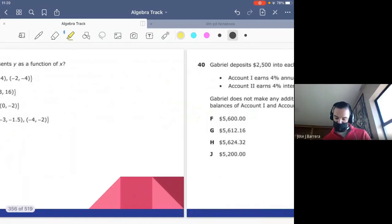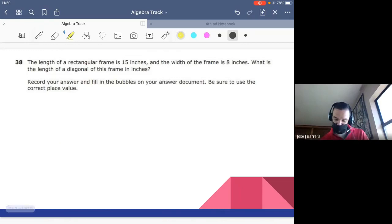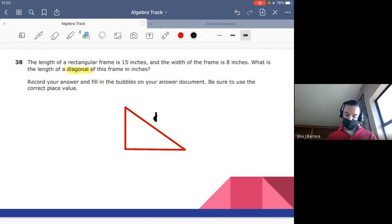We got one, two, three questions left, guys. What is the length of a diagonal of this frame? Anytime you guys read diagonals, let me put in shapes. Diagonals are usually Pythagorean theorem. So they want the length of the diagonal. This is the diagonal. So the length of it is 15. The width is 8. What is the length of the diagonal?